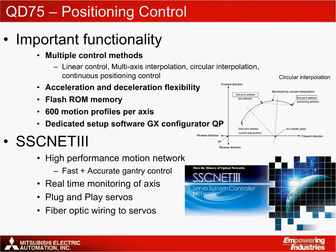The QD75 is the motion controller for synchronising movements between the X, Y and Z axes. The QD75 stores the parameter data for both servos and positioning operations and reacts to the requests sent from the PLC CPU. There are one, two and four axis modules available for the QD75. As this example outlines a three-axis system, the QD75 MH4 has been selected. Key functions for this module are: linear control for point-to-point addressing along one axis; multi-axis interpolation for point-to-point addressing along multiple axes; circular interpolation for faster movement between points where lifting of the workpiece is required; continuous positioning control for when the workpiece has to be moved to multiple points in one positioning operation; and acceleration and deceleration functionality of the workpiece.